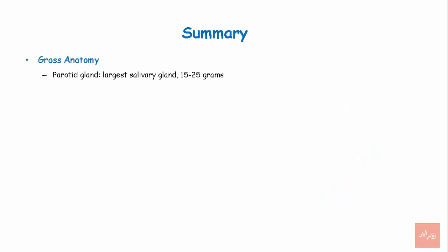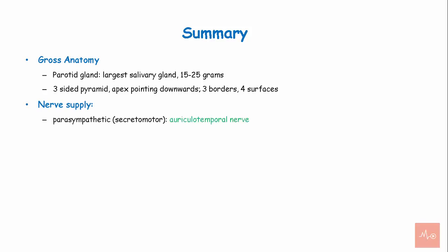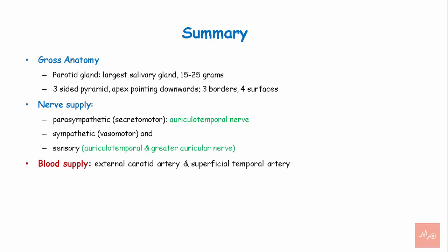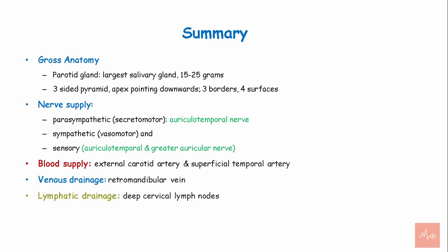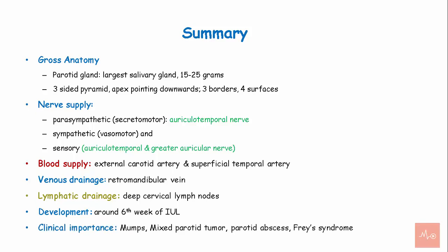To summarize: the parotid gland is the largest salivary gland, weighing about 15–25 grams. It is a three-sided pyramid with an apex pointing downwards, three borders, and four surfaces. Nerve supply is through the parasympathetic fibers via the auriculotemporal nerve, sympathetic supply, and sensory supply. Blood supply is through the external carotid artery and superficial temporal artery. Venous drainage occurs via the retromandibular veins, and lymphatic drainage via the deep cervical lymph nodes. Development occurs during the sixth week of intrauterine life. Clinical importance includes involvement in mumps, mixed parotid tumor, parotid abscess, and Frey's syndrome.